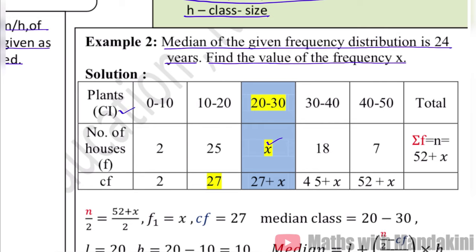We have class intervals and frequency (number of houses). Now we calculate cumulative frequency: first is 2, then 2 plus 25 gives 27, then adding x gives 27 plus x, then adding 18 gives 45 plus x, then adding 7 gives 52 plus x. So our total n is 52 plus x.